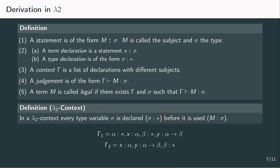The first example, gamma 1, is a valid lambda 2 context: alpha is used by x and y and declared first, and beta is also declared before it was used. Gamma 2, however, is not a lambda 2 context — it violates the definition in two ways. Firstly, alpha is never defined as a type even though it's used as one. And secondly, beta is defined after it's used.